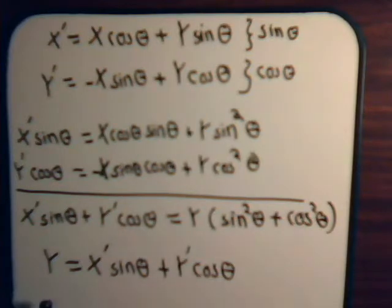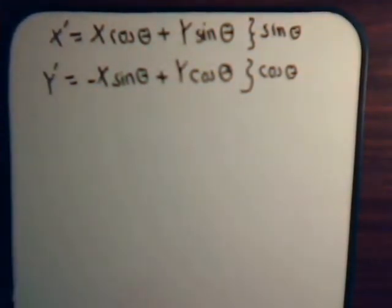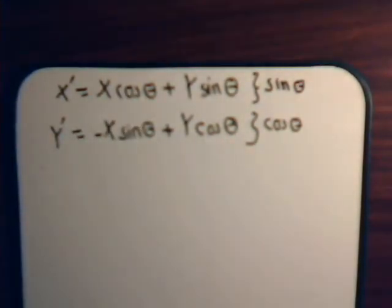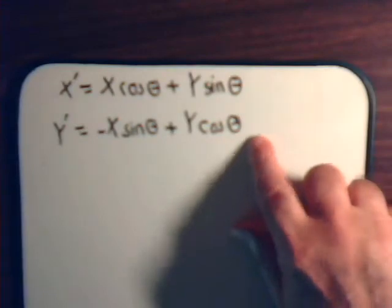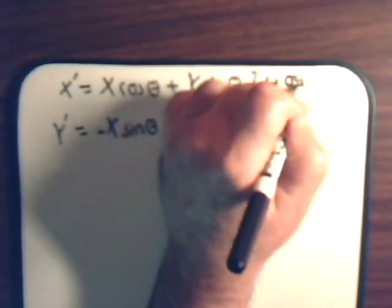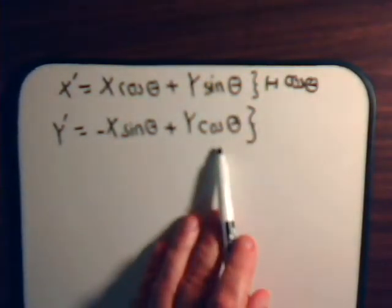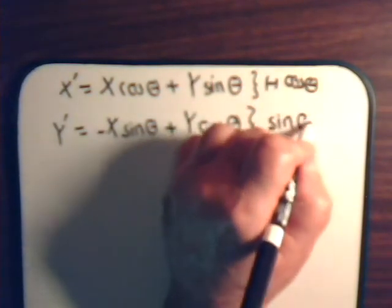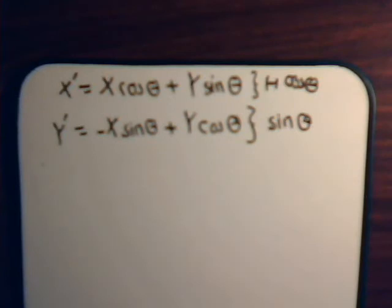Now let's see if we can get an equation that expresses x in terms of x prime and y prime. We go back to the two equations from video 30. This time if we multiply both sides by minus the cosine of theta, and for the other equation multiply both sides by the sine of theta — let's see if that works out. Here minus cosine theta times sine theta and y sine theta cosine theta would add together and drop out.